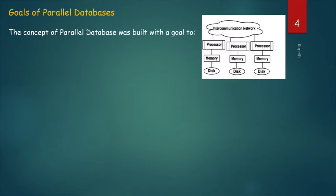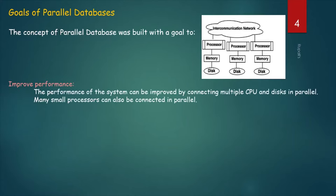Goals of Parallel Databases. First, Improve Performance. The performance of the system can be improved by connecting multiple CPUs and disks in parallel. Many small processors can also be connected in parallel. By connecting multiple resources like CPU and disk in parallel, we can significantly increase the performance of the system.